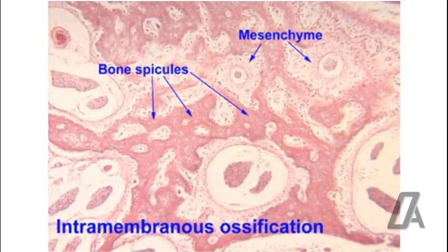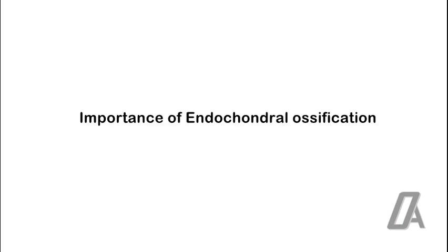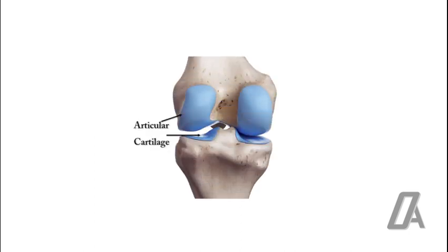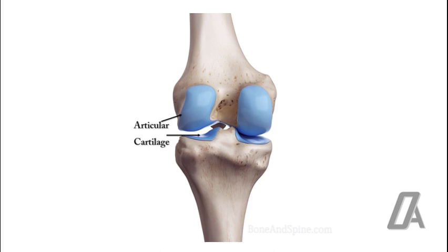Endochondral bone is not formed directly from cartilage; osteoblasts invade cartilage and replace it. Cartilage behaves like a soft tissue, and growth takes place both by interstitial growth and appositional growth. In bone, interstitial growth is not possible.